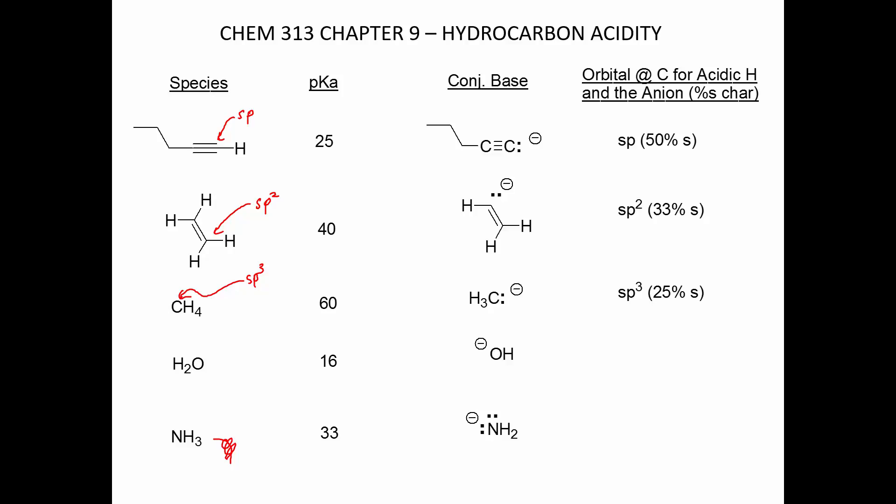The enhanced acidity of the alkyne is due to percent S character. The S orbitals get closer to the positively charged nucleus, and having excess electron density in an S orbital is a stabilizing influence. The carbanion orbital corresponds to the orbital the hydrogen was attached to: there's 50% S character in sp, 33% S in sp2, and 25% S in sp3.